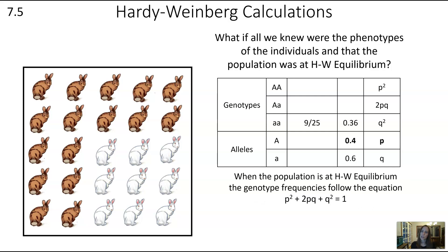When the population is at Hardy-Weinberg equilibrium, the genotype frequencies follow the equation p squared plus 2pq plus q squared equals 1. That's because those are all of the total possibilities: either homozygous dominant (p squared), heterozygous (2pq), or homozygous recessive (q squared). Since those are all of the possibilities, they add up to 1, because in terms of frequency, 1 is 100%.